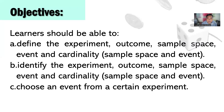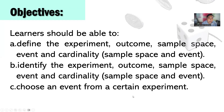So what are we going to aim for this session? First, define Experiment, Outcome, Sample Space, Event, and Cardinality. Second, identify the Experiment, Outcome, Sample Space, Event, and Cardinality. Third, choose an event from a certain experiment.